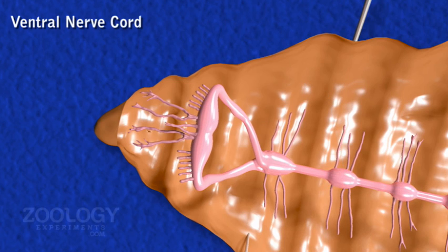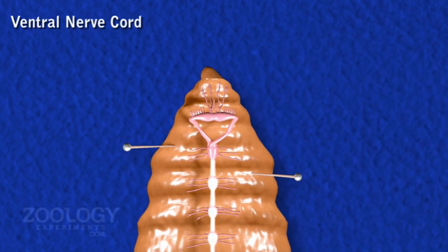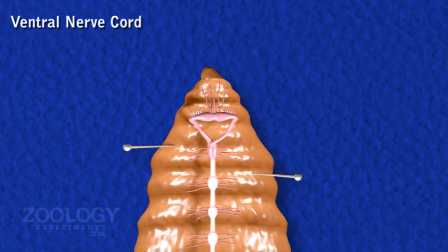The Ventral Nerve Cord looks like a single cord, but it is actually double, consisting of two cords. Each segmental ganglion also represents a pair of ganglia, one belonging to each cord of the double ventral nerve cord.